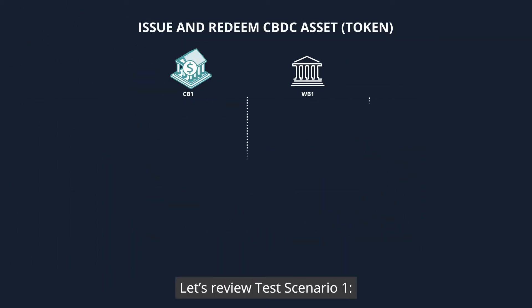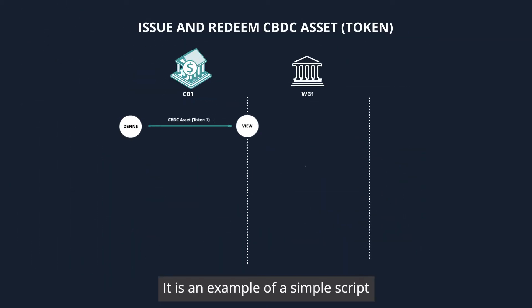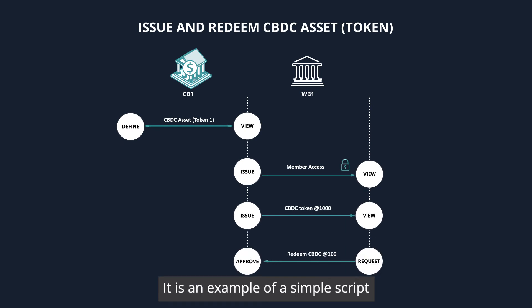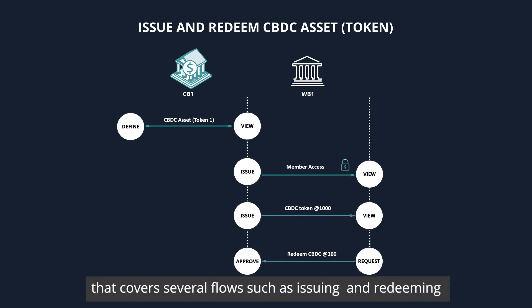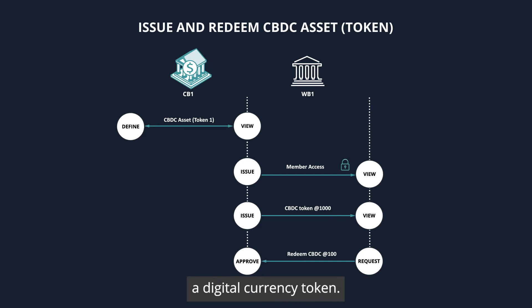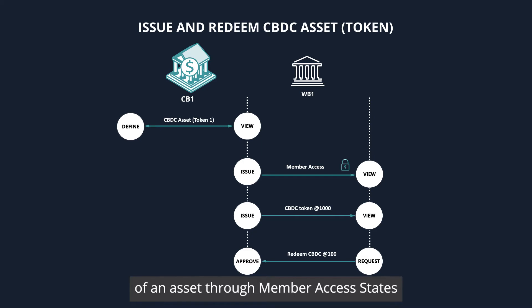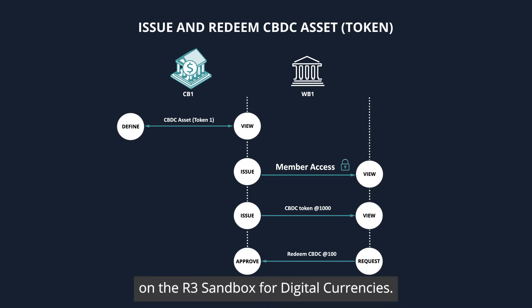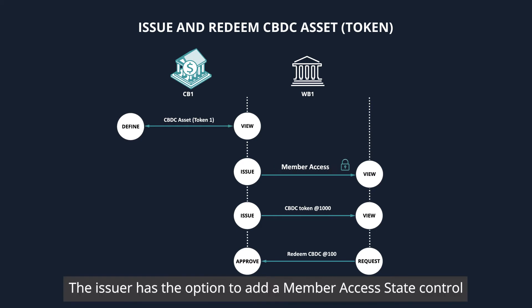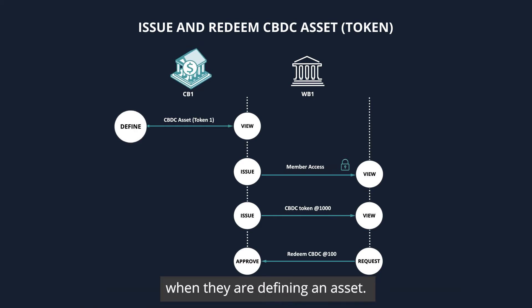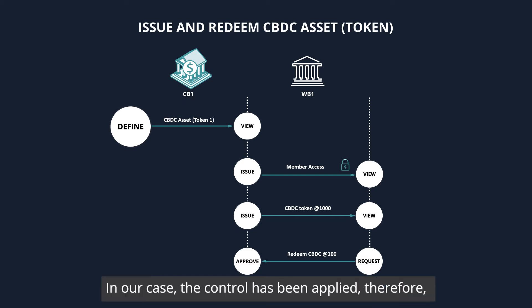Let's review test scenario 1. It's an example of a simple script that covers several flows such as issuing and redeeming a digital currency token. The central bank as the issuer manages custody permissions of an asset through member access states on the R3 sandbox for digital currencies. The issuer has the option to add a member access state control when they are defining an asset. In our case, the control has been applied.